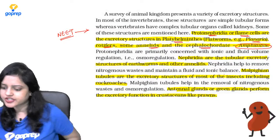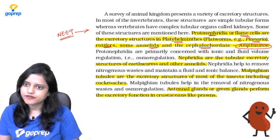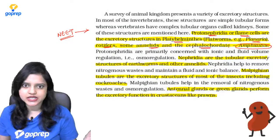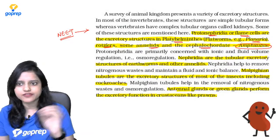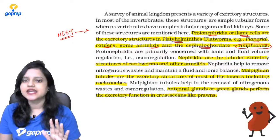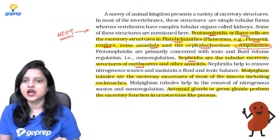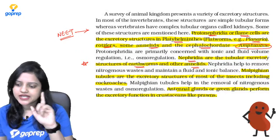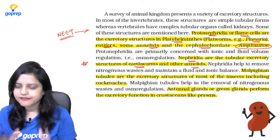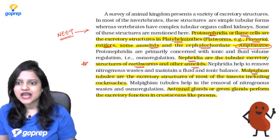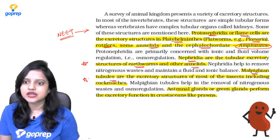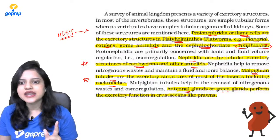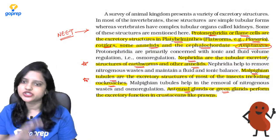Amphioxus belongs to cephalochordata, where the notochord extends from head to tail. Next is nephridia — nephridia is the excretory organ in earthworms and other annelids. Note that some annelids also have protonephridia, but usually it's nephridia. Next, Malpighian tubules are the excretory organ in insects, especially cockroaches. Green glands or antennary glands are present in crustaceans like prawns.